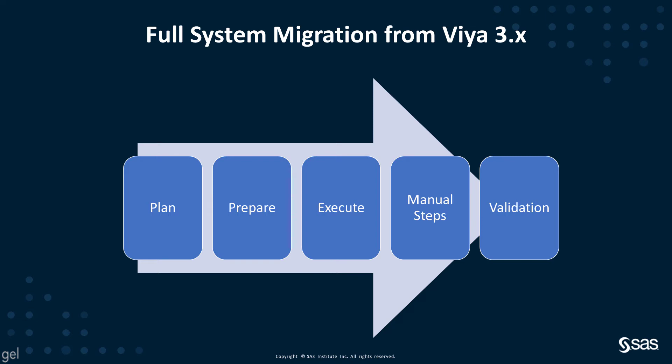Full system migration to SAS Viya is a movement of content and data from a SAS Viya 3, 4, or later deployment to a SAS Viya 4 deployment running on Kubernetes.